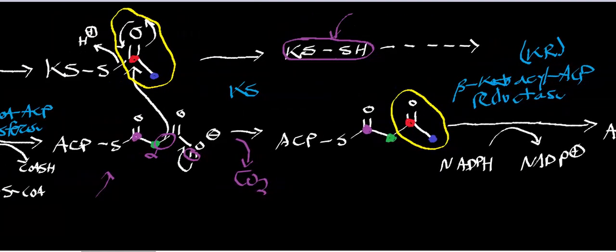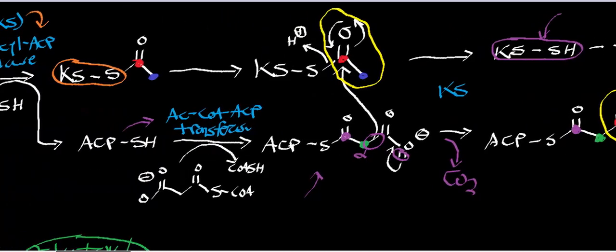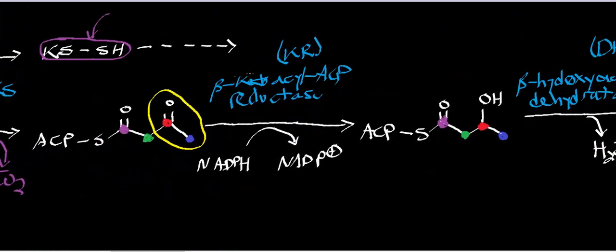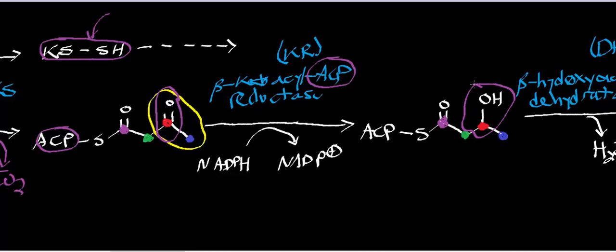This condensation is the most complicated step; everything else is relatively straightforward. The next step is an NADPH-dependent reduction catalyzed by beta-ketoacyl-ACP reductase. The growing acyl chain remains on ACP, and we use NADPH to reduce the beta-ketone into a hydroxyl group.